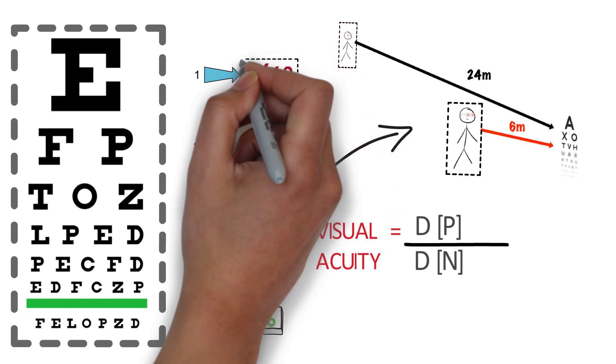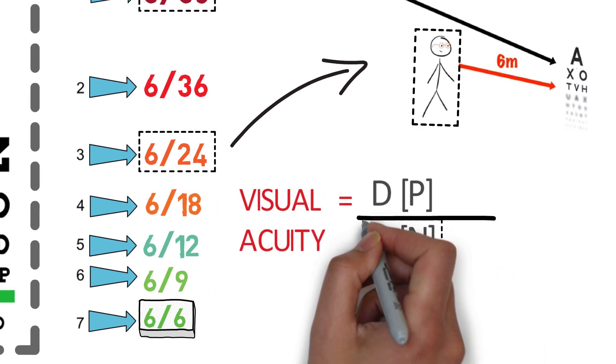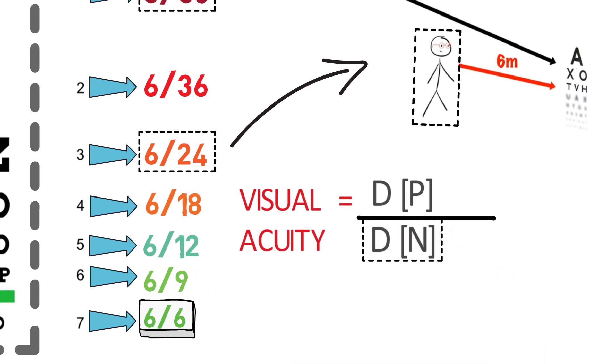Similarly, if the patient is able to read only the first line, the vision is recorded as 6x60, it means what a normal person can read from 60 meters, this patient can read from 6 meters. So, how do we know the distance from which normal person can read a particular letter? Here comes the concept of minimum angle of resolution.